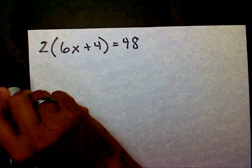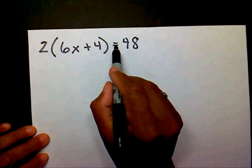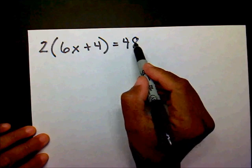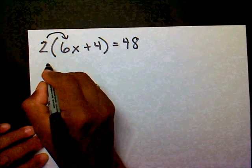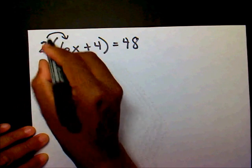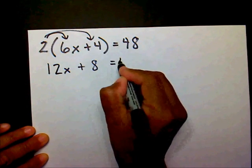For this problem, I have 2 times 6x plus 4 equals 48. I'm going to apply my distributive property. 2 times 6x is 12x, 2 times 4 is 8, positive 8 equals 48.